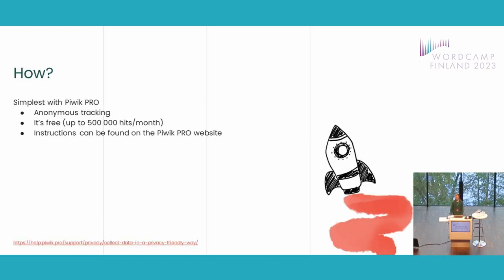How to do it? I'm not going to teach you today exactly how to do it — this is a very quick slide and there are many ways of doing it — but this is my recommendation if you just want to have some kind of implementation. PIVIC Pro, if you don't know, is an analytics tool very similar to the older version of Google Analytics. It is free and has a free subscription for up to 500,000 hits per month. In Finland, most sites can actually fit inside that free bracket, so there's basically no real reason not to use it. It also offers anonymous tracking and has a guide for it — there's a link you can see, it's very small, but you can find it on Google, or you can just ask me about it.